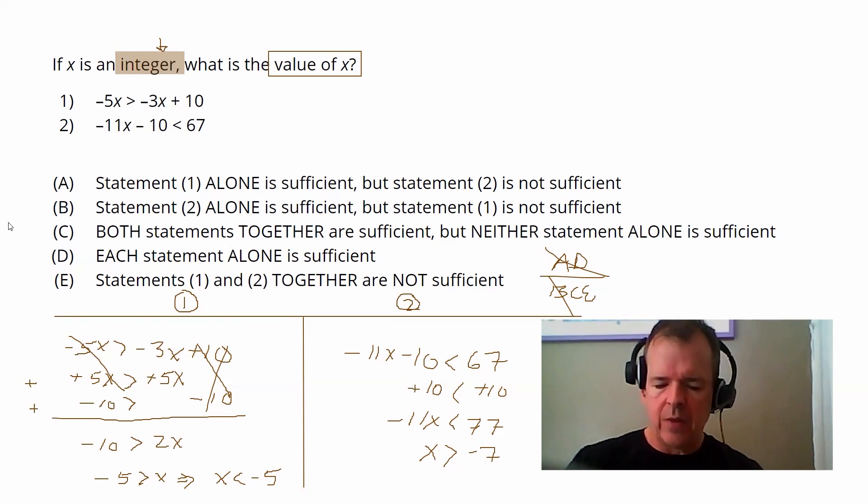And so when we do that, what we see is, and we can arrange this so that we can combine them together, we see that X is greater than negative seven. That's what's coming down from statement two. Then we can bring over this information that X is less than negative five.